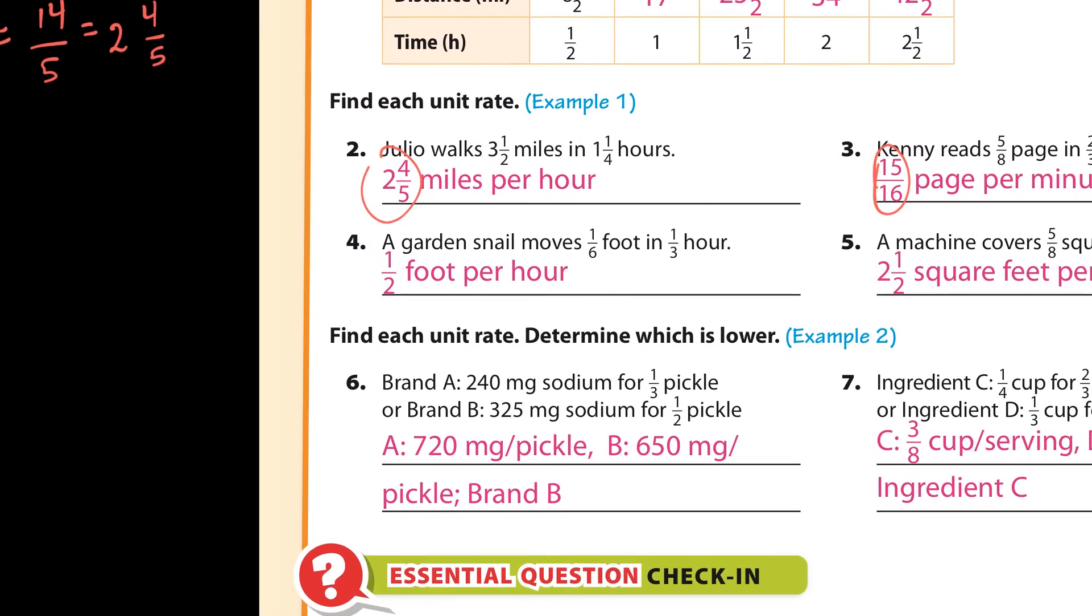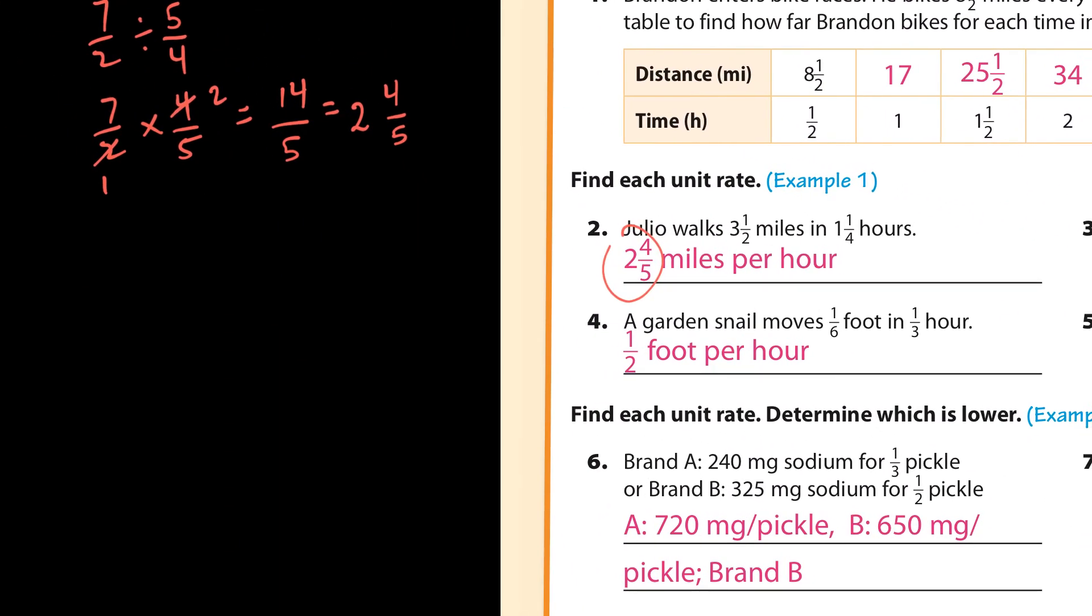Then we go over here to number 4. That's 1 sixth divided by 1 third. So that would be 1 sixth times 3 over 1. 1 times 3 is 3, 6 times 1 is 6, and 3 sixths simplifies to 1 half. And that's how you get 1 half.